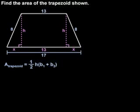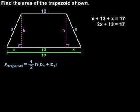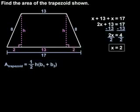To find the value of x, notice that the segments that have lengths of x, 13, and x make up the full segment that has a length of 17. So the segment addition postulate tells us that x plus 13 plus x equals 17, or 2x plus 13 equals 17. And solving from here, x equals 2.